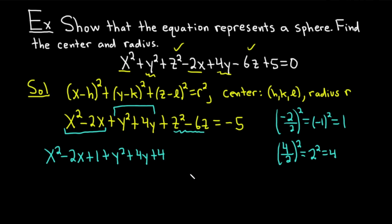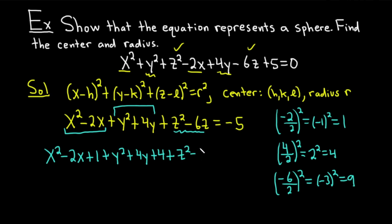Lastly, we handle the z's: z squared minus 6z. Take the coefficient of z, which is negative 6, divide it by 2 and square it: negative 6 over 2 squared equals negative 3 squared, which is 9. So we add 9 to the z group. We've now completed the square — not once, not twice, but three times.